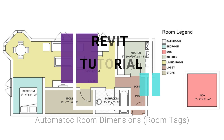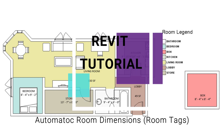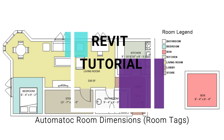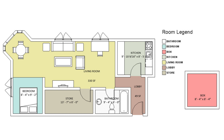Hello everyone, today I am going to show how you can place automatic dimensions very easily in Revit using the room tag command. You only have to create the family of room tag once, and as soon as you place the room tag command on any square or rectangular room, the dimensions will be automatically placed in it.